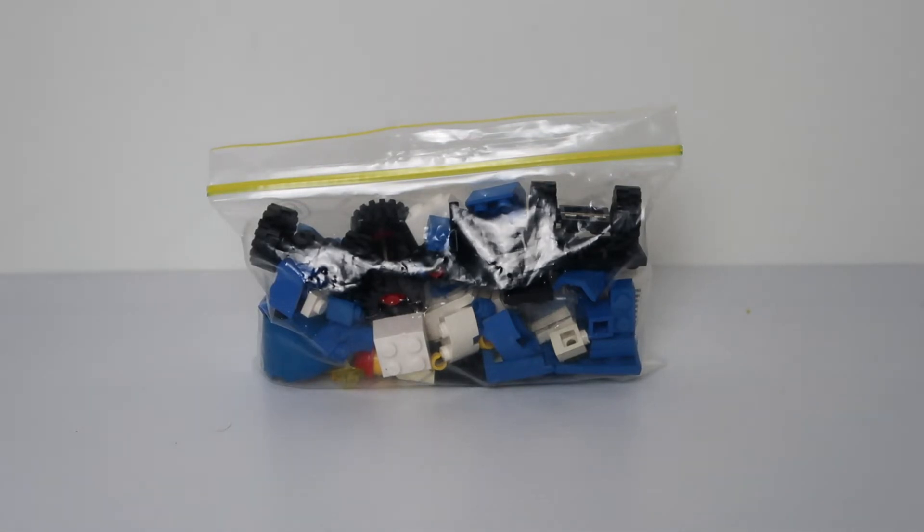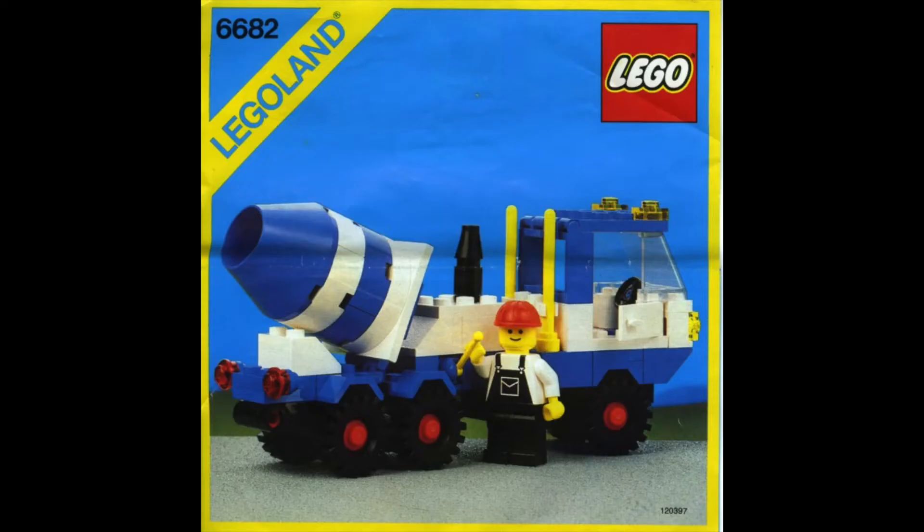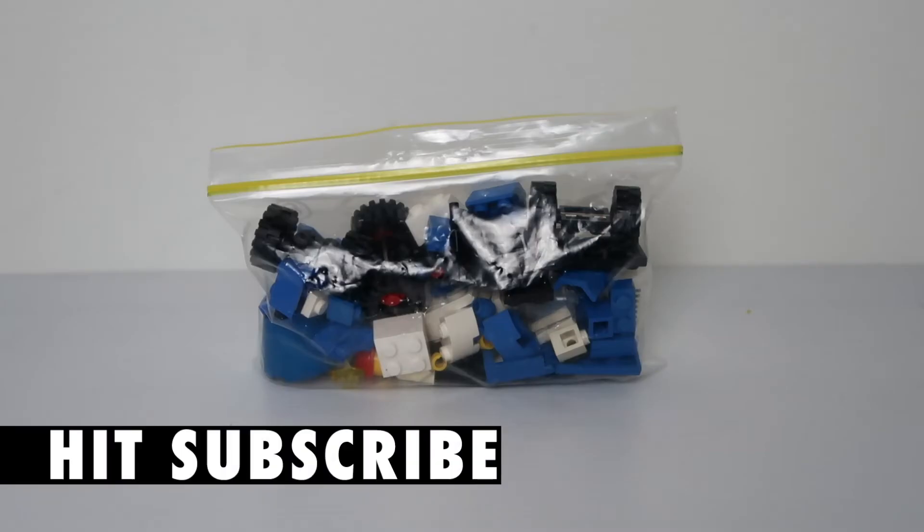This innocuous looking bag of bits is Lego set number 6682. Now for those of you who have no idea what that is, and I imagine it's quite a lot of people, this is a cement mixer set released back in 1985. I picked this up for nine dollars on eBay. I'm very happy about that one.